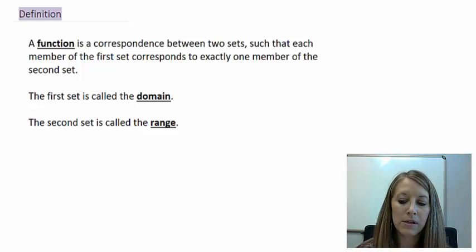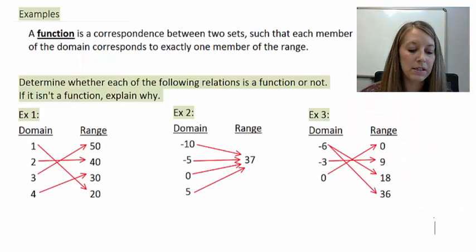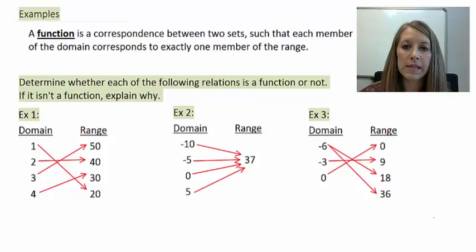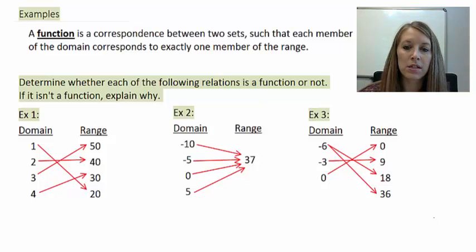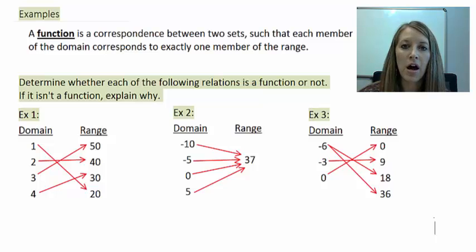It's still pretty ambiguous at this point, so let's see some examples to help clarify what defines a function or not. The definition is: a relationship such that each member of the domain corresponds to exactly one member of the range. I have three examples here. I suggest you pause the video and take a guess at whether they are a function or not, going off of the definition.